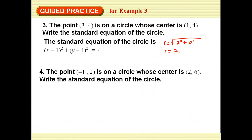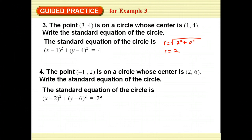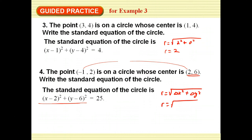The point (−1, 2) is on a circle whose center is (2, 6). Write the standard equation of the circle. The answer is x minus 2 squared plus y minus 6 squared equals 25. The center gives us the binomials. For the 25: the change in x from −1 to 2 is 3 squared, and the change in y from 2 to 6 is 4 squared, so r equals 5. We plug into the formula and we have it.